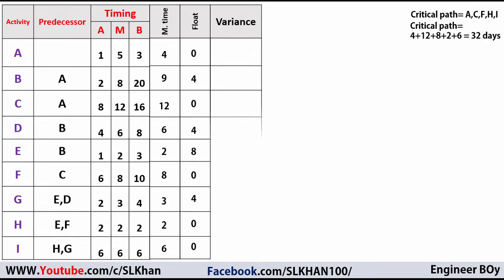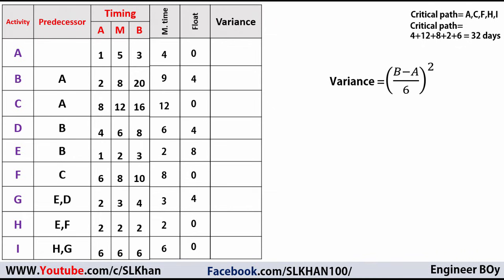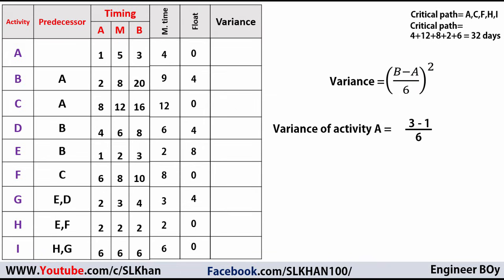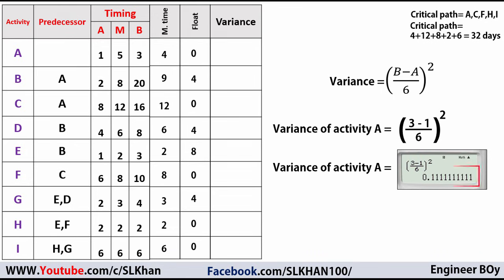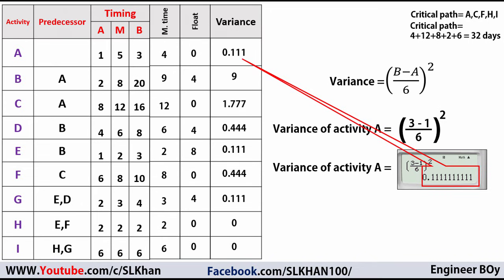Now I'm gonna calculate the variances for each activity using the formula: ((b − a) / 6)². For activity A: (3 − 1) / 6, whole squared, which gives 0.111. I'll plug this value in the variance column for activity A, then apply the same formula to calculate the variance for each remaining activity.